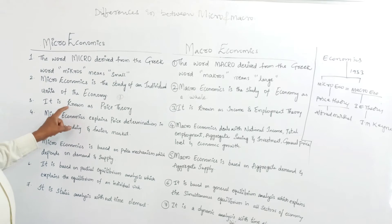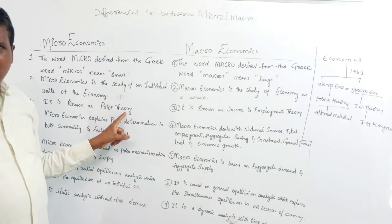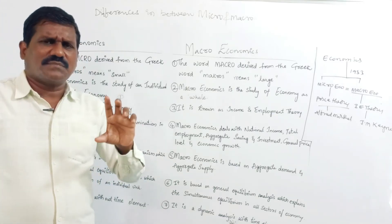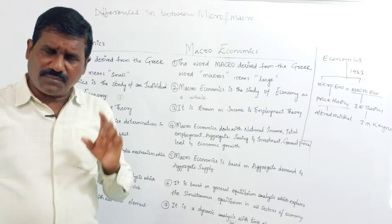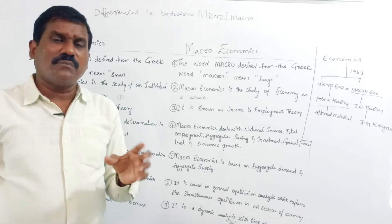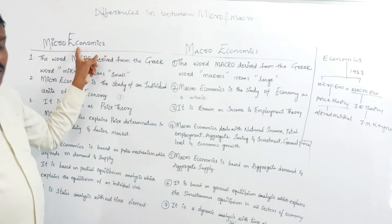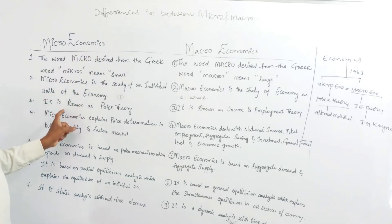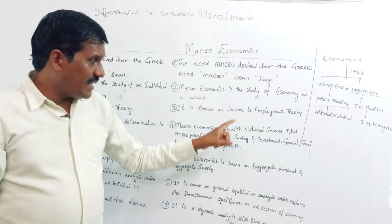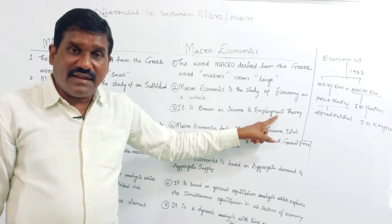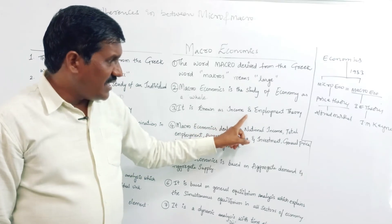Microeconomics is also known as price theory because its main concepts involve price determination — demand, supply, market, and factors of production. Most concepts relate to price determination, which is why it is called price theory. Macroeconomics is known as income and employment theory, dealing with income levels and how employment levels can be improved.